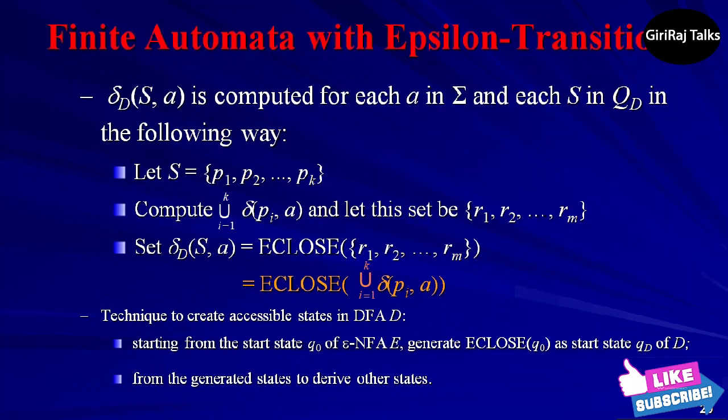And last, δD. δD(S, a) is computed for all a in Σ and sets S in QD by: Let S = {p1, p2, ..., pk}. Then compute union of i=1 to k δE(pi, a). Let this set be {r1, r2, ..., rm}. Then δD(S, a) = ECLOSE({r1, r2, ..., rm}).